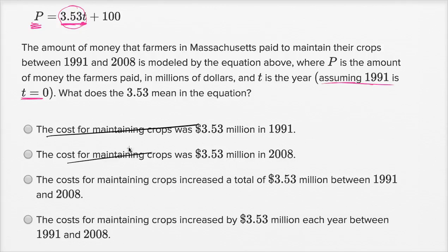No, that's not going to be true either, because it's 100 million in 1991, and then each year it's going to increase by 3.53 million. The cost for maintaining crops increased a total of 3.53 million between 1991 and 2008. No, it's going to increase 3.53 million per year, not over the entire time span. The cost for maintaining crops increased by 3.53 million each year between 1991 and 2008.